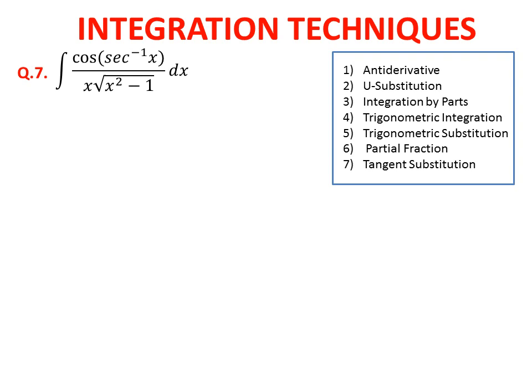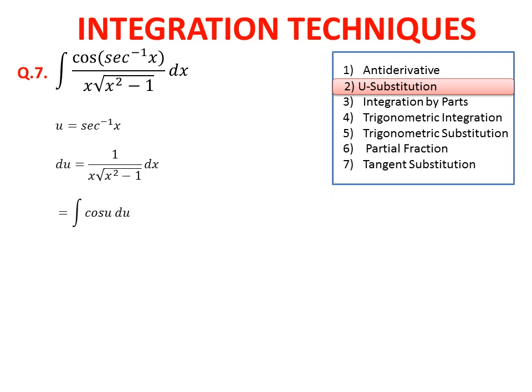The last integral uses simple u-substitution. Let u = sec⁻¹(x), whose derivative is 1 over x√(x²−1), which is part of our integral. This substitution gives the integral of cos u, whose anti-derivative is sin u. Replacing u back gives the final answer. We hope you enjoyed and understood this lecture — thank you very much.